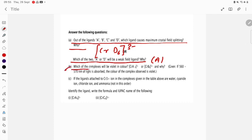Now part B: Which of the complexes will be violet in color? [CrA6], [CrB6], and why? Given if 560 to 570 nanometer light is absorbed, the color of the complex absorbed is violet.